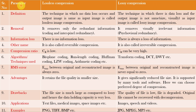This column shows different comparison parameters for lossless compression and lossy compression. Starting with the definition: the technique in which no data loss occurs and the output image is the same as the input image is called lossless image compression — the image is compressed during transmission but at the receiving end the complete image can be recovered successfully. Whereas the technique in which there is data loss and the output image is not the same in size or visually as the input image is called lossy image compression.